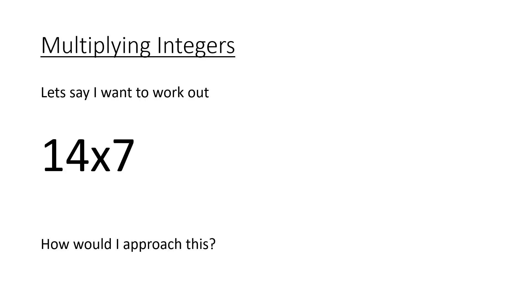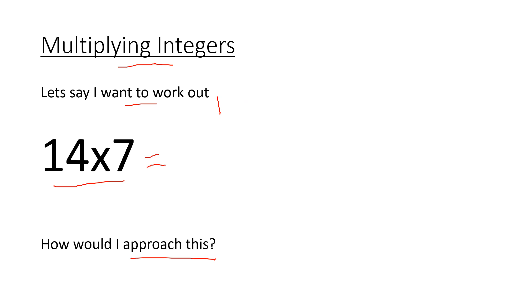Kicking off with multiplying integers: let's say I want to work out 14 times 7. There are multiple different ways to work it out, but I'm going to partition the numbers. So 14 is the same as 10 plus 4. So 14 times 7 is the same as doing 10 times 7...